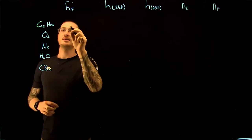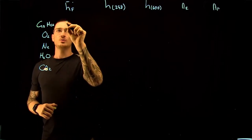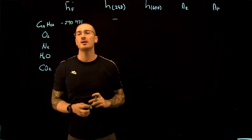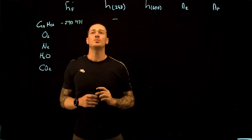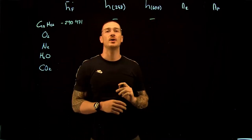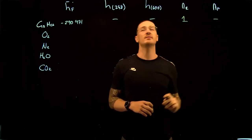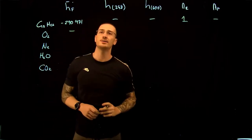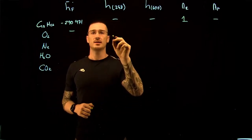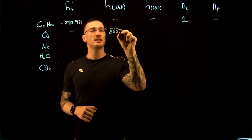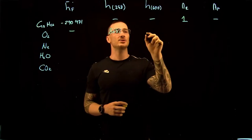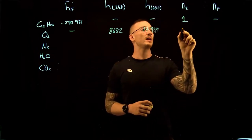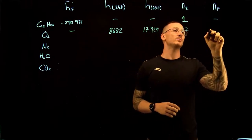For C12H26, the enthalpy of formation is minus 290,971 kJ per kmol. Since air enters at 25 degrees C, the enthalpy terms cancel, and we have 1 mole in reactants and none in products. For O2, there is no enthalpy of formation. At the reference temperature, it is 8,682 kJ per kmol; at 600 Kelvin, it is 17,929. We have 37 moles in reactants and 18.5 in products.